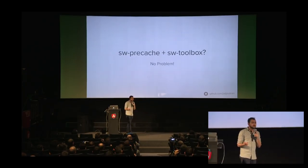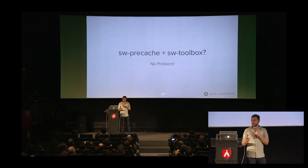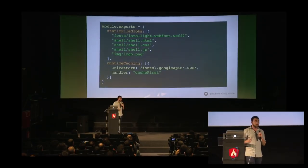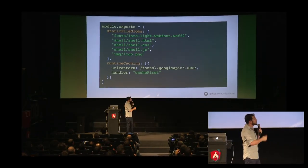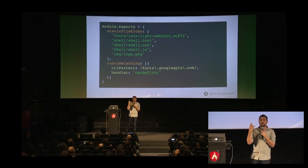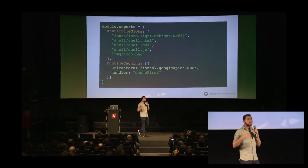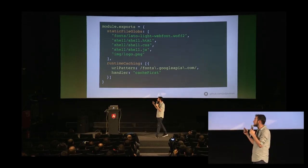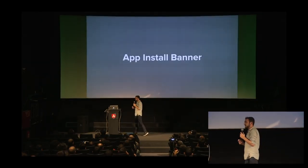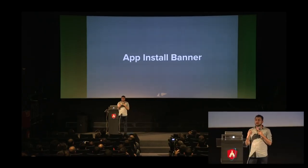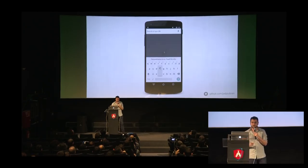You'll want to use both sw-precache and sw-toolbox. It's easy: in the sw-precache configuration file, you add a runtime caching section where you provide a URL pattern — a regular expression — and a handler. For example, all cached resources can be treated with a cache-first strategy. Once you have a progressive web app and users visit it, the browser will automatically ask if they'd like to add it to their home screen.